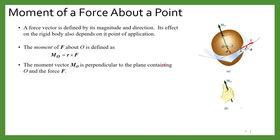This moment vector MO is perpendicular to the plane containing O and the force F. Suppose we draw a plane — as you can see by this blue color — that is passing through O as well as through F. Then the resultant MO is perpendicular to this plane, as we have seen in the cross product of vectors. So MO is perpendicular to the plane containing O and F.